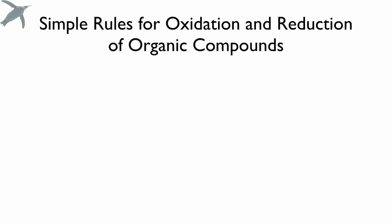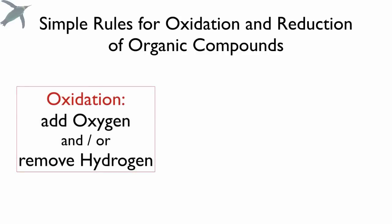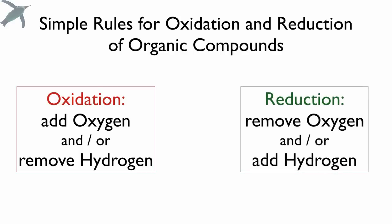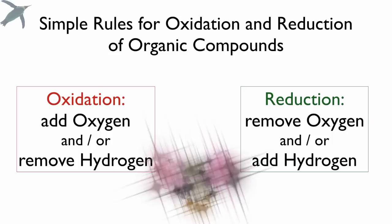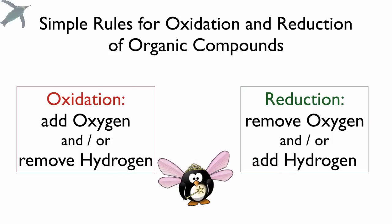There are two rules that you have to remember for oxidation and reduction of organic compounds. For oxidation, you're going to be looking at the addition of oxygen and/or the removal of hydrogen. For reduction, you're going to be looking at the opposite: the removal of oxygen and/or the addition of hydrogen. And for most general biology students, that's really all you need to know.